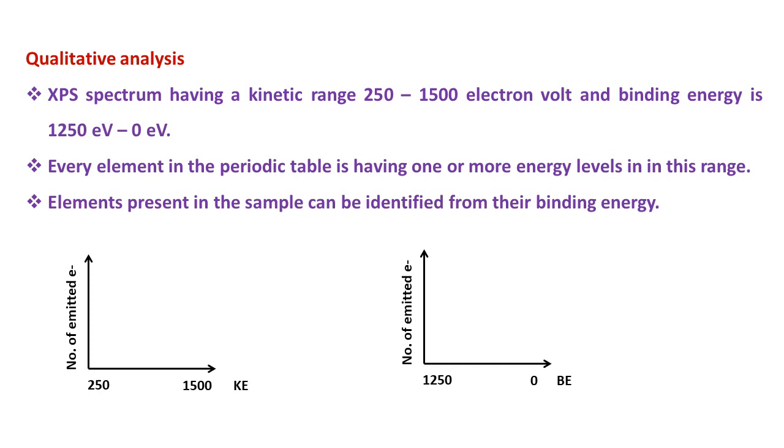Qualitative analysis. The XPS spectrum having a kinetic energy range 250 to 1500 eV and binding energy is 1250 eV to 0 eV. Every element in the periodic table has one or more energy levels in this range. So elements present in the sample can be identified from their binding energy. Now here you can see two graphs: one is for kinetic energy and one is for binding energy. Y-axis is number of electrons or power of electrons as a function of energy, kinetic energy or binding energy.